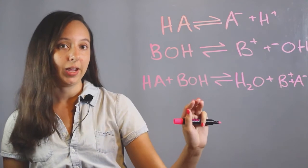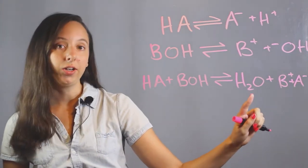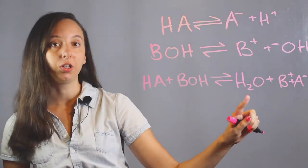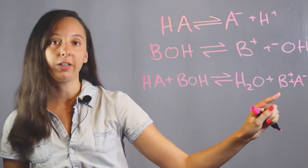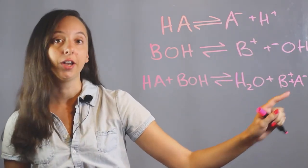We have our acid, our base, they react together to quench and form water, thus becoming neutral instead of charged, like in these two reactions. And then you have your spectator ions, the base and the acid, just hanging out.